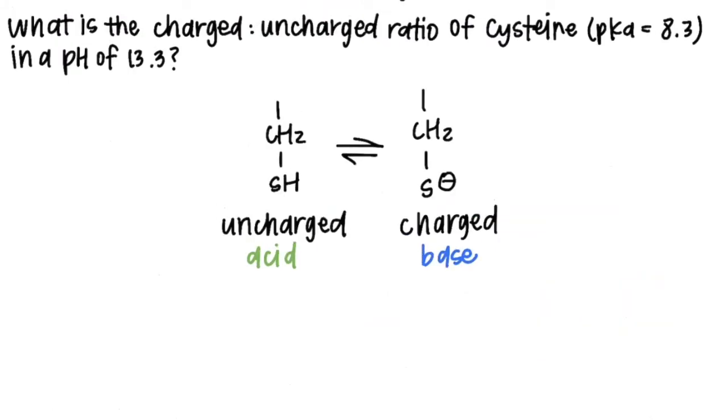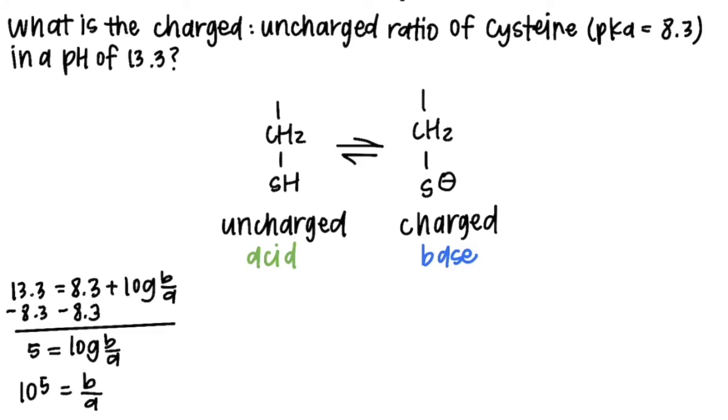Moving on, the next step is to calculate our base to acid ratio using the Henderson-Hasselbalch formula. So I get 13.3 is equal to 8.3 plus the log base over acid. I subtract from both sides. And now I take the log of both sides. And my base to acid ratio is equal to 10 to the 5.